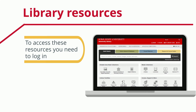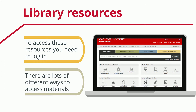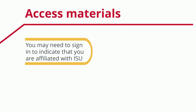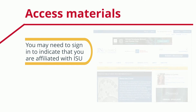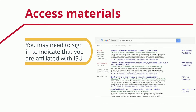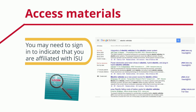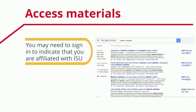To access these resources, you'll need to log in with your ISU NetID and password. There are lots of different ways to access materials. If you're trying to access resources by going straight to a journal's website or clicking on an article from a general Google search, you may need to sign in on that resource's page in a way that tells the resource or company that you are affiliated with ISU.